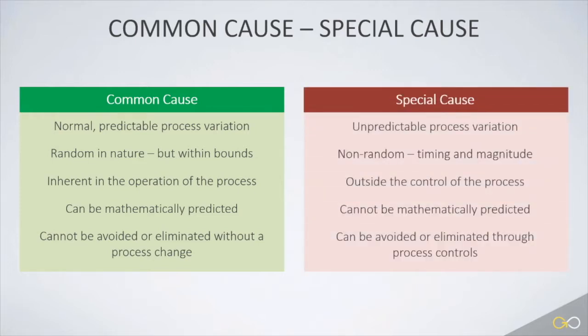In contrast, special cause variation is unique. It is unpredictable, non-random variation. It's not due to the inherent design of the process. Therefore, it is outside the control of the process, but it impacts process performance. Although it can't be predicted, it can be controlled by placing process controls on the process or input that screens or filters out the special causes.